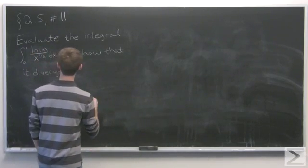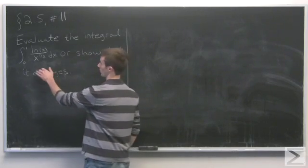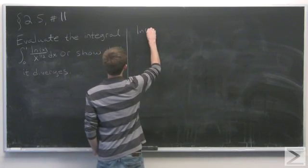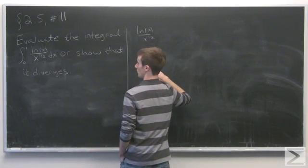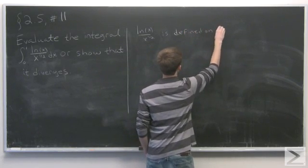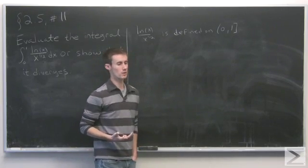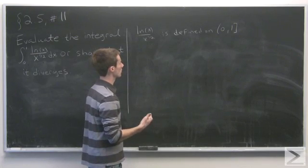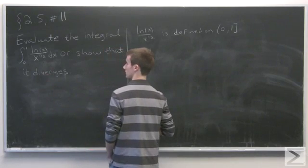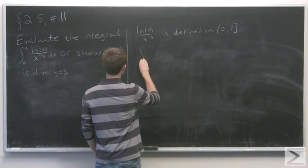We should first find the problem points. We see that the integrand is defined on the open interval at 0, closed at 1 — defined on (0, 1]. This means the only thing that prevents us from taking the Riemann integral, as opposed to an improper integral, is the left-hand endpoint, because the integrand is not defined at 0. Natural log is not defined there, and x to the negative one half is also not defined.